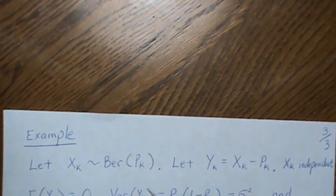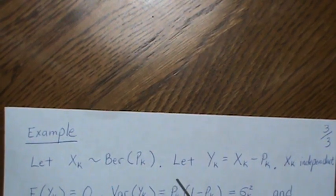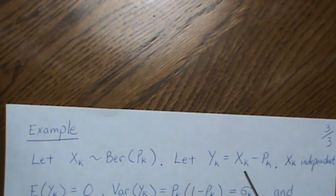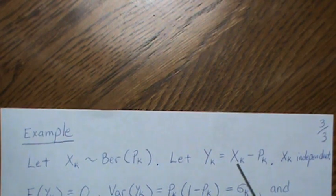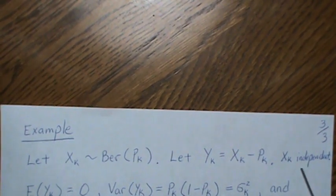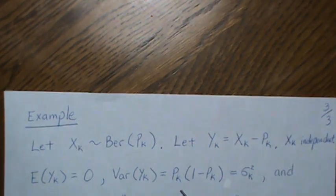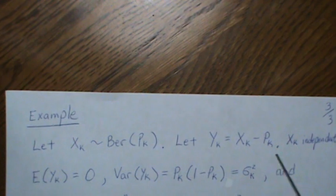Let Xk be Bernoulli with some parameter pk. Let Yk equal Xk minus pk.